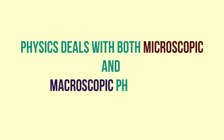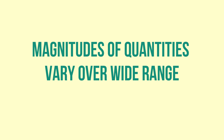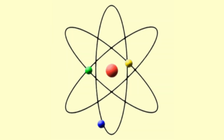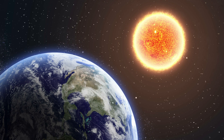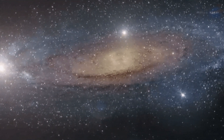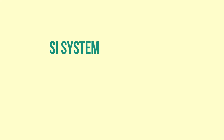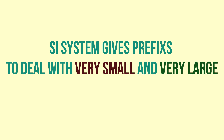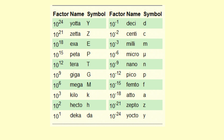Since physics deals with things happening at both microscopic and macroscopic levels, the magnitude of these quantities varies over a wide range. For example, the size of a nucleus is about 10⁻¹⁵ meters, while the distance between the Sun and Earth is about 1.51 × 10¹¹ meters. The mass of an electron is 9.1 × 10⁻³¹ kg, while the mass of our galaxy is 2.2 × 10⁴¹ kg. To handle this wide range, the SI system provides standard prefixes for certain powers of 10.